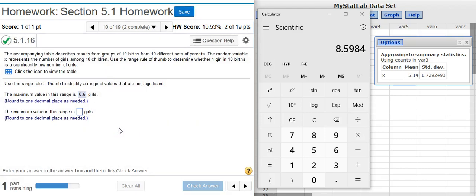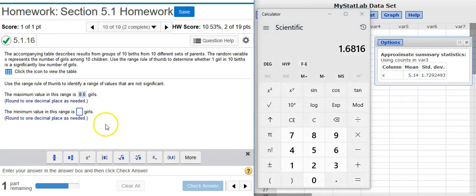Now the second part asks us for the minimum value. I'm going to do the same thing, use the mean and the standard deviation, make the same calculation, only this time I'm going to subtract everything out. So there's the mean value, 5.14, subtracting out twice the standard deviation. Round to one decimal place.